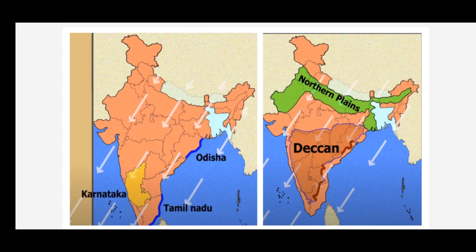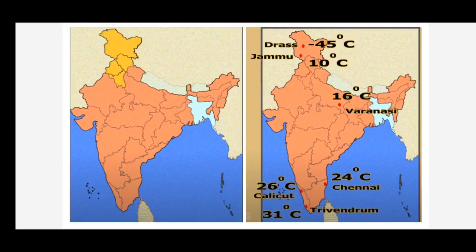The cold weather season commences at the end of November and continues till March. The skies are relatively clear with pleasantly warm conditions. The mean temperature in the northern plains is below 20 degrees Celsius, and gets even lower in Himachal Pradesh, Jammu and Kashmir, Punjab, and Haryana. January is the coldest month. The mean maximum temperature for January at Trivandrum is 31°C, at Calicut it is 26°C, and at Chennai it is 24°C.